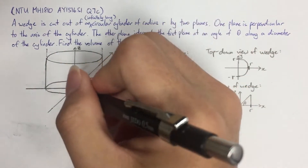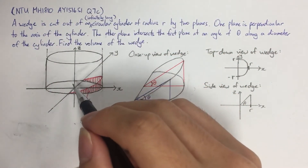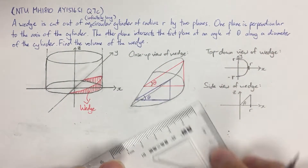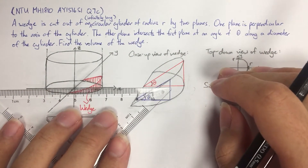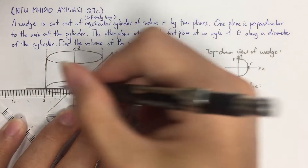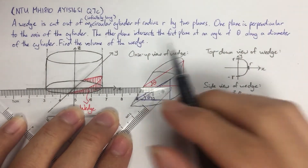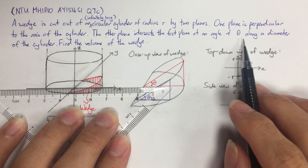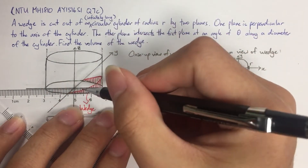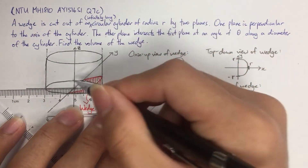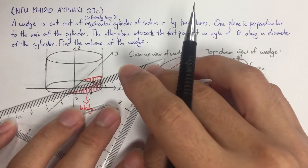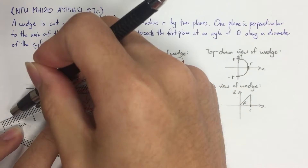Since the cylinder goes up in the z-direction, the axis of the cylinder is the z-axis. This means that one plane perpendicular to the axis of the cylinder is just the xy-plane. That's the first cut. The second cut intersects the first plane at an angle of theta along the diameter of the cylinder — so we take this plane, rotate it by theta, and slice the cylinder one more time.